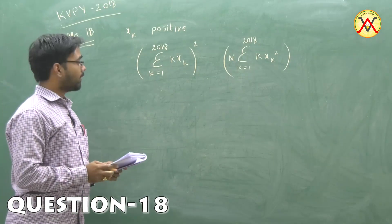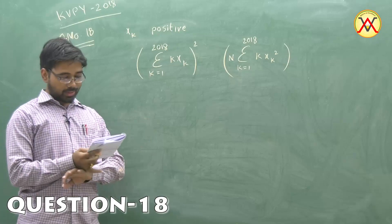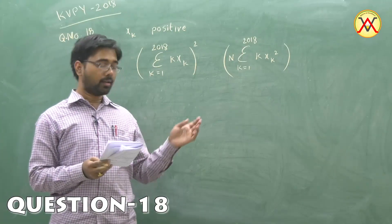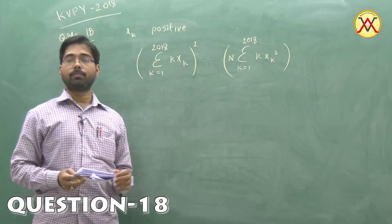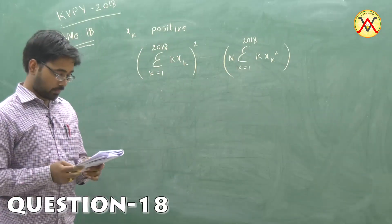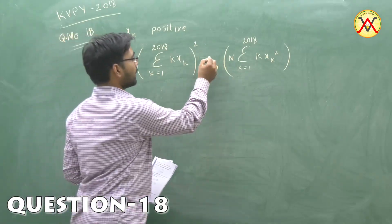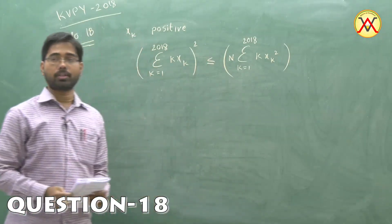In the question, they have given xk is greater than k^4 plus k^2 plus 1. So xk are all going to be positive. Now, we have to find whether this equality is true or not.